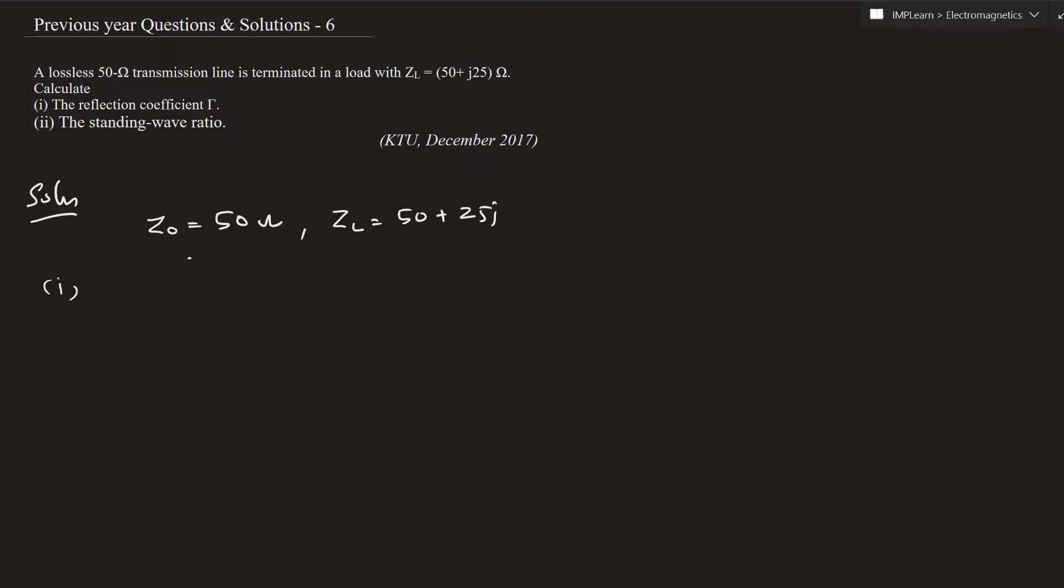First thing is reflection coefficient. Reflection coefficient expression: gamma equals ZL minus Z0 divided by ZL plus Z0, which is equal to 50 plus 25j minus 50 divided by 50 plus 25j plus 50.